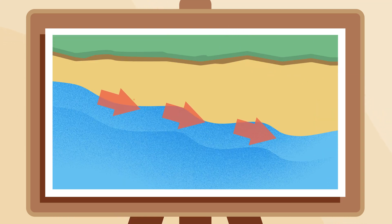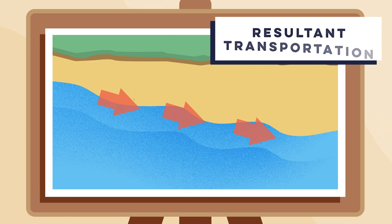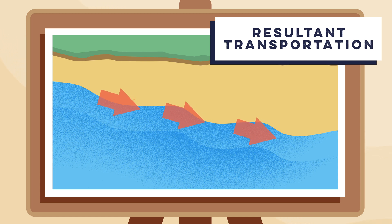Step five is the result. This repeated action forms a conveyor belt that transports material over long distances, bit by bit changing the shape of the coastline.